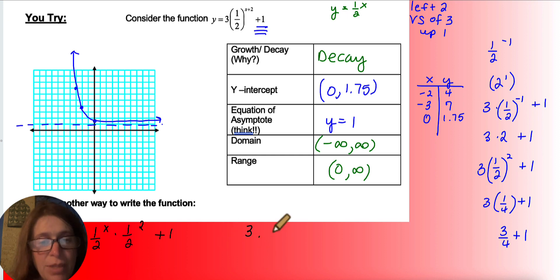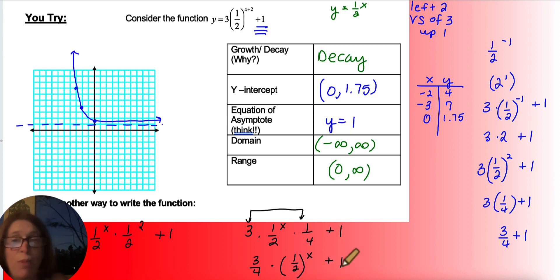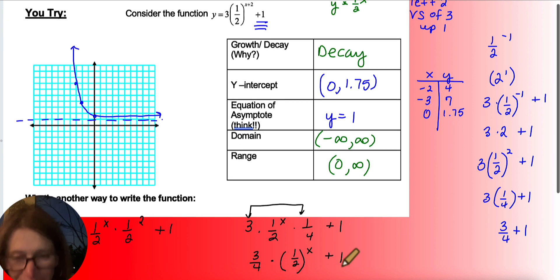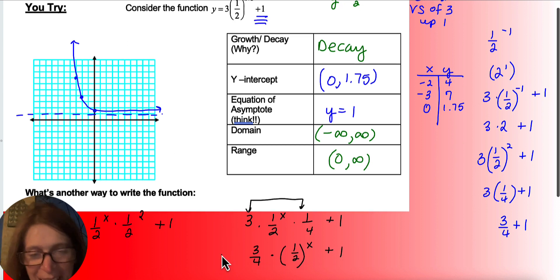So 3 times 1 half to the x times 1 fourth plus 1. So that would give me, if I combine these guys, that would give me 3 fourths times 1 half to the x plus 1. So my y-intercept, not 3 fourths because I'd have to add 1 to it. So 1 and 3 fourths. So hopefully you got that right, and that would be the alternate or equivalent function.